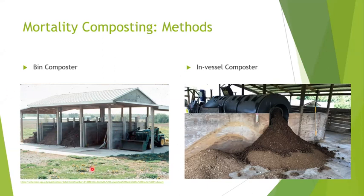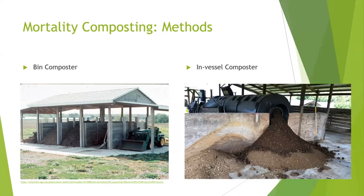A bin compost system like the simple three-bin system shown here is a great system — it's covered, it's on a concrete pad, and it's built to specs so the operator can easily go in with a front-end loader, turn piles, and have easy access to each pile. In this type of system, the mortality is typically surrounded with a carbon bulking additive on the bottom and sides to contain it, with a bottom layer as well as a top layer to help keep vectors out and contain odors.